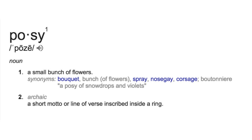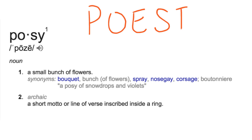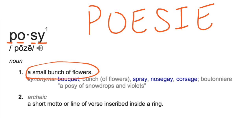Now let's take a look at the word posy. Sir Philip Sidney spells the word p-o-e-s-i-e, whereas this definition spells it p-o-s-y. But again, most important is the definition of the word. We have two here. The first definition states a small bunch of flowers, but this seems like an unlikely definition for Sir Philip Sidney's title. The next definition states a short motto or line of verse inscribed inside a ring. This definition seems more likely, especially considering the next word, poems.